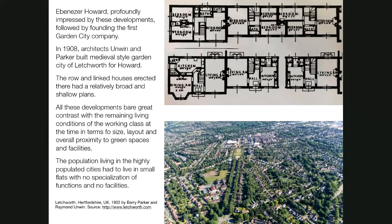Letchworth was not a company town but a normal town within Garden City principles, with many similarities such as low-rise row houses, connection to greenery, and organic design. The industrialists believed a happy worker is a faithful worker, so they had systems where you could apply part of your salary to improve the infrastructure or educational facilities. Of course, if you lost your job, you lost everything. These company towns represented maybe 0.5% of all developments; the rest of the world was still suffering in very poor conditions.